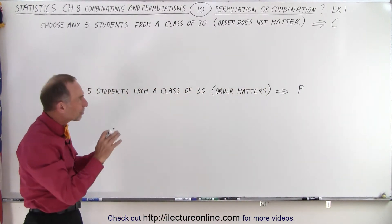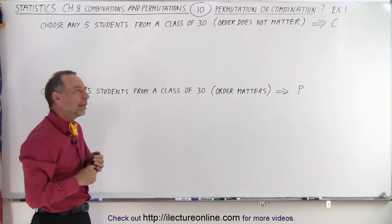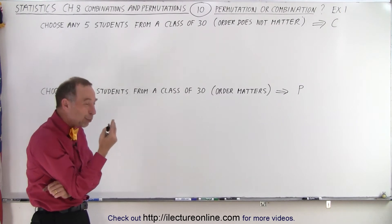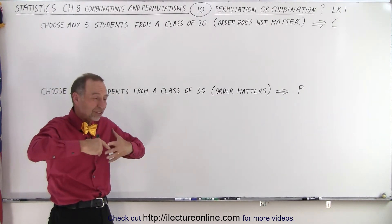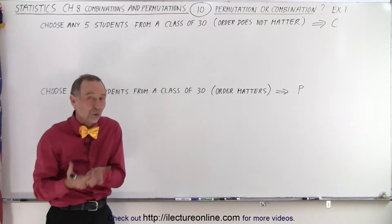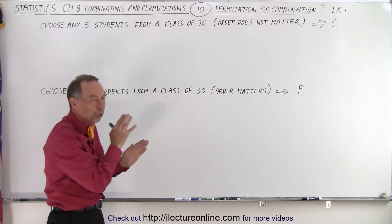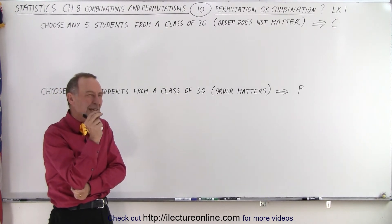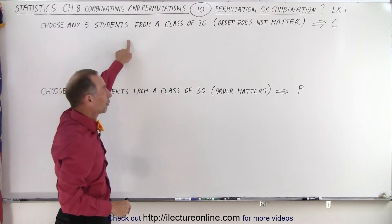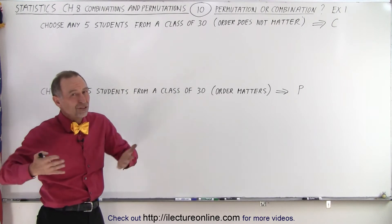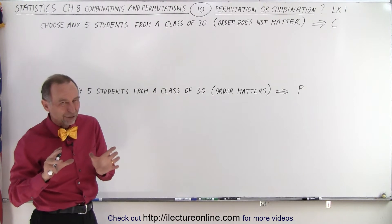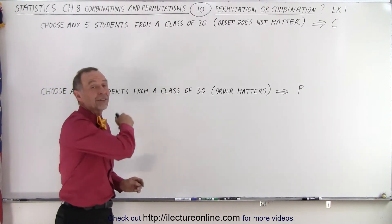Now what if they didn't explicitly tell us that order doesn't matter? Then we have to kind of think about it and go, we're picking five students out of a class of 30. Do they really care what the order of the students is? We just care about which five students we end up with. So if they don't specify order doesn't matter or order matters, either one, if they don't specify that detail, I would lean towards the first one, that order really doesn't matter. You're simply interested in which five students out of 30 you pick. So sometimes you kind of have to think about it or sometimes it's explicitly stated.